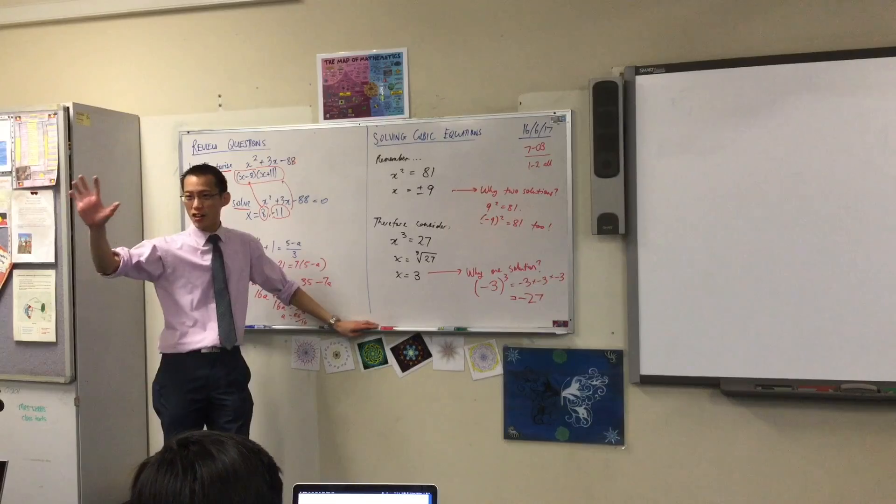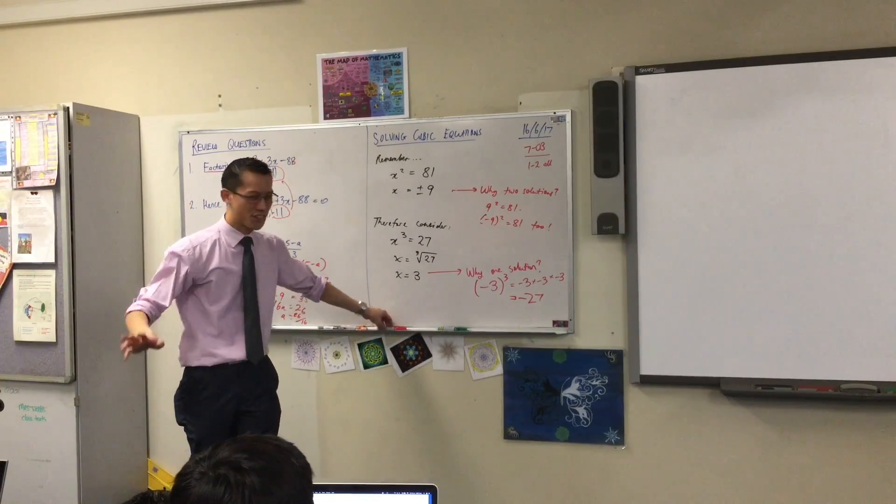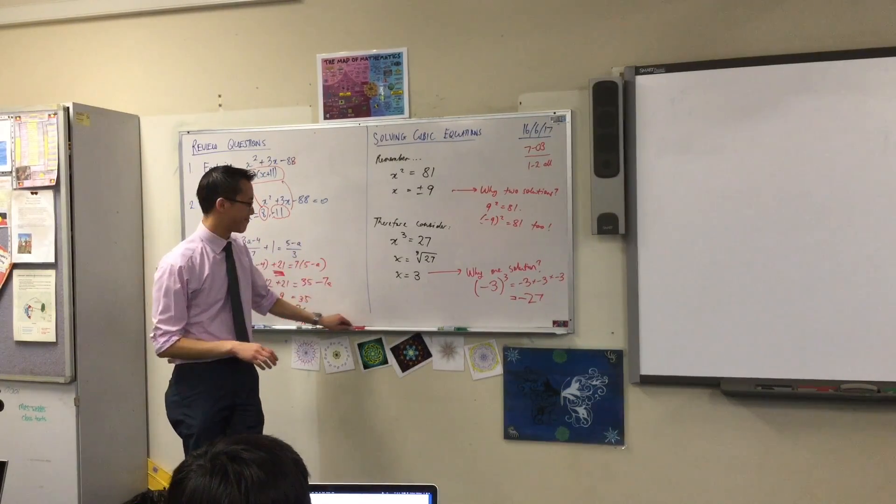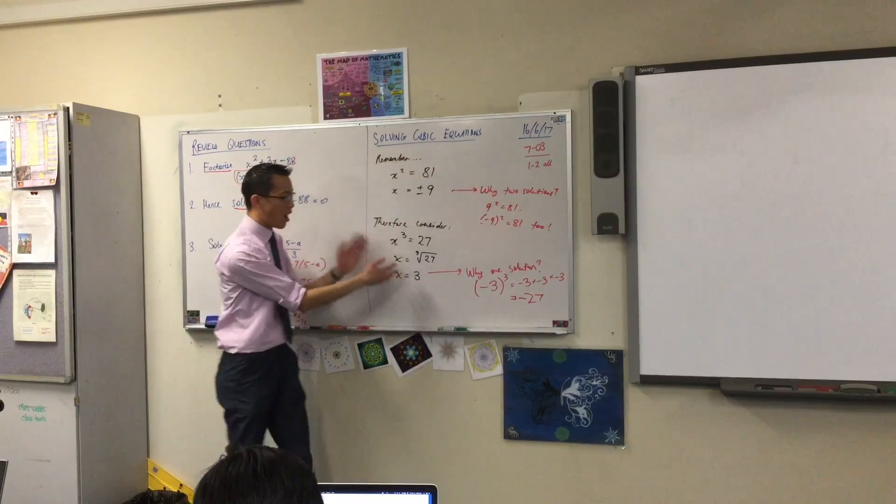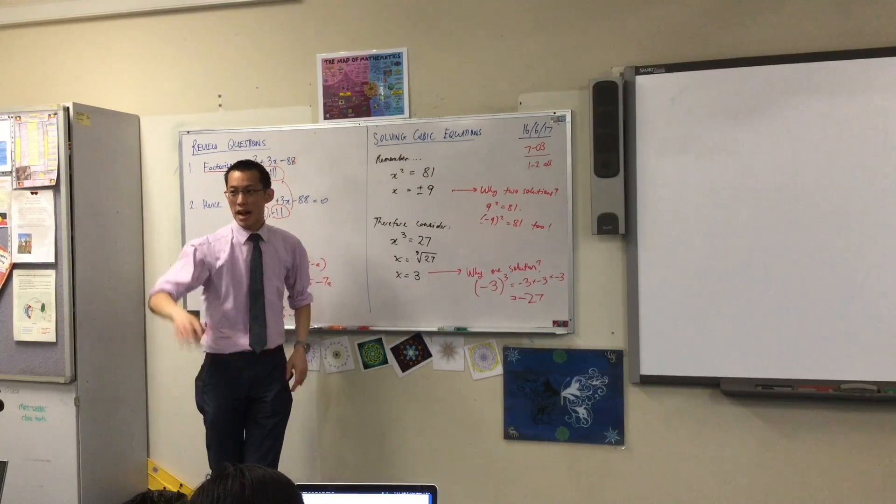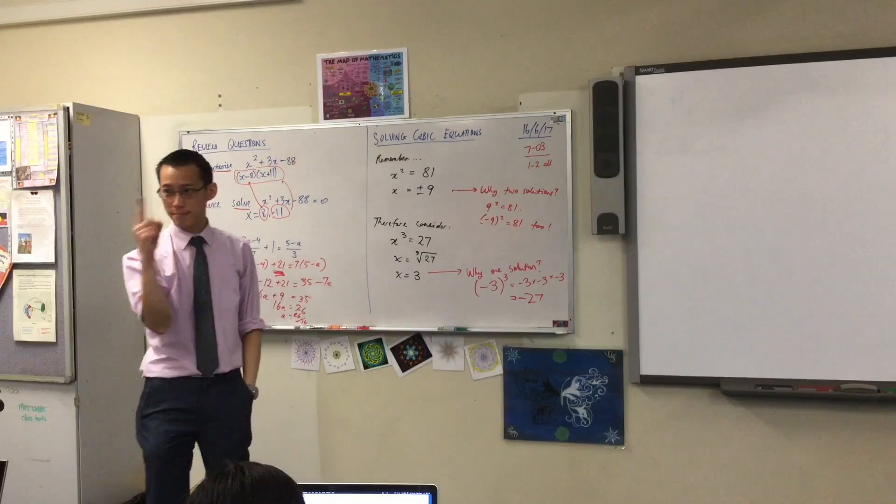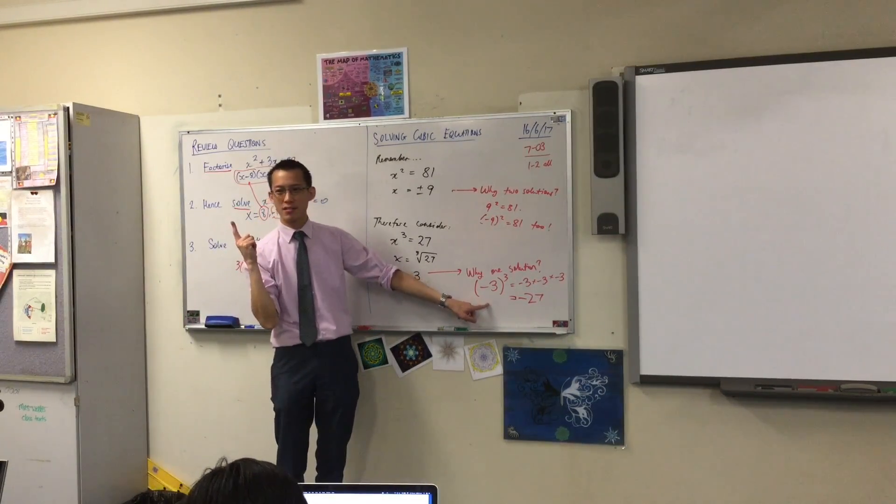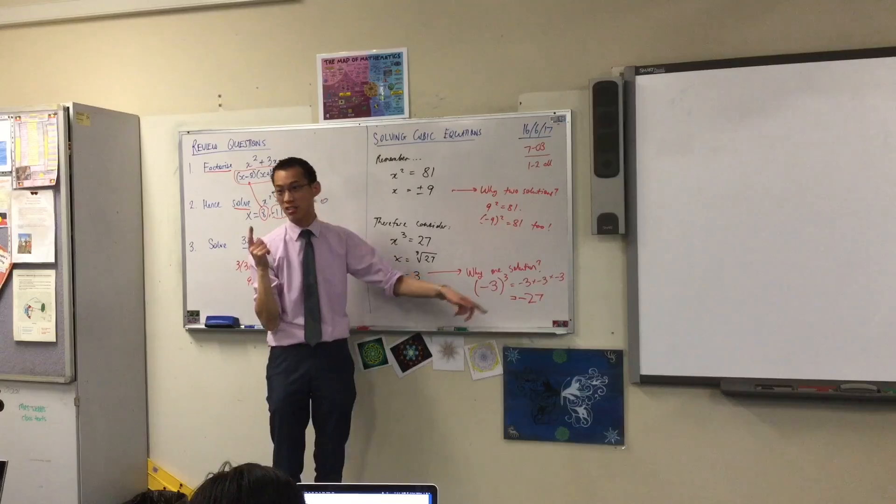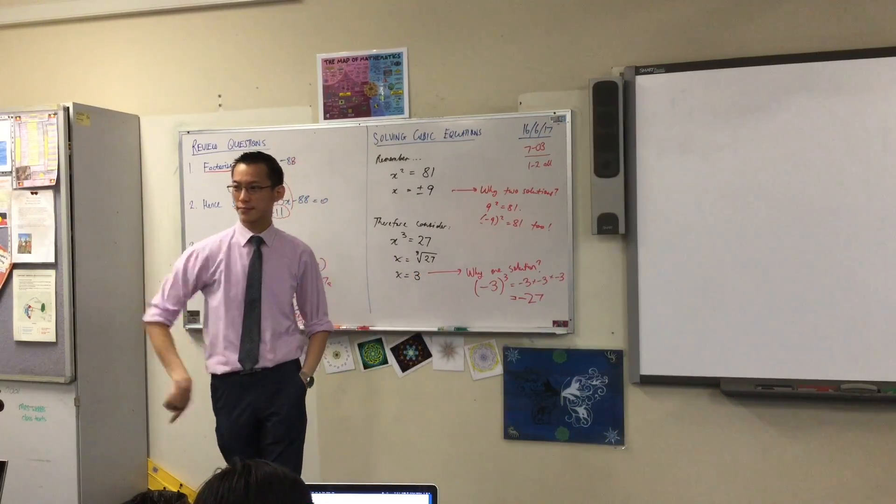So please note. Please note, year 10. When you're solving cubic equations of this form, they're very simple. How many solutions do you get? You don't get plus or minus. You don't get plus or minus. You just get the plus. What is the exact one?